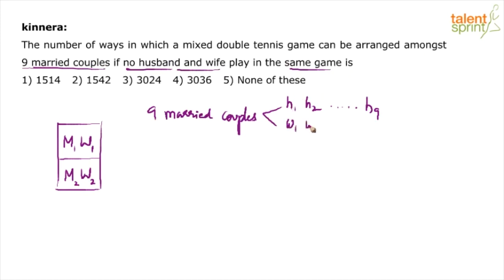And similarly, wife 1, wife 2 and wife 9. I mean, the pair that way, the couples. Now my requirement is I need two men and two women. So in how many ways can you choose two men? First of all, let us choose the men and women. And then we will try to do the permutations here. First, let us do the combination. Let us choose the required persons.